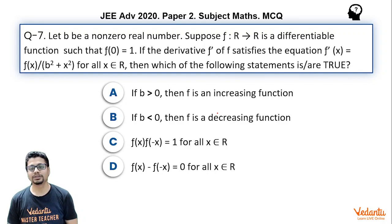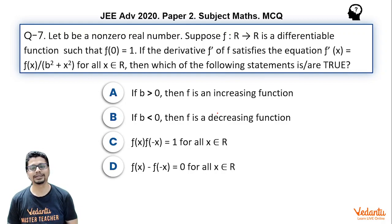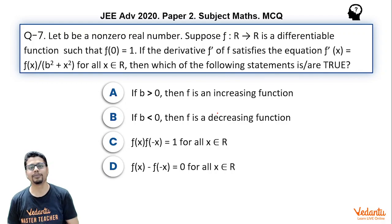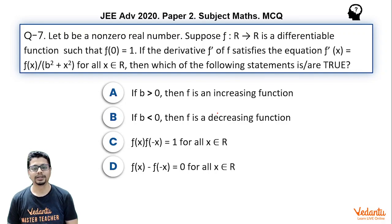Which of the following statements is or are true? It is a multiple correct type question. Options A and B concern whether f(x) is increasing or decreasing for b > 0 and b < 0 respectively. Option C says f(x) · f(−x) = 1 for all real x. Option D says f(x) − f(−x) = 0 for all real x.